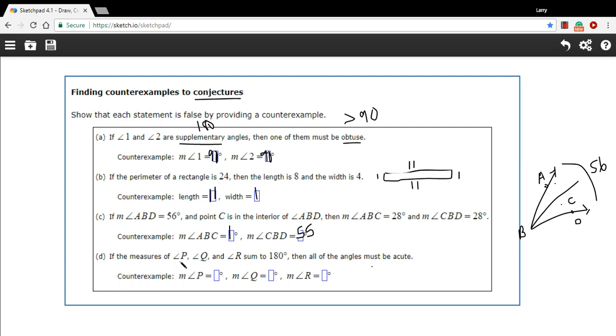All right, one more. It says if the measures of P, Q, and R sum to 180, so they add up to 180, then all of the angles must be acute. Hmm, well I suppose that could happen, but they don't have to be. What if we had two really small angles?